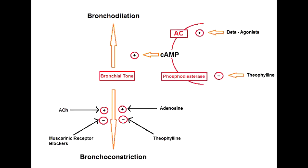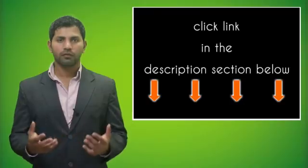What are the clinical uses of ipratropium and tiotropium? Ipratropium is used clinically to prevent bronchoconstriction and can also be used in the treatment of COPD. Tiotropium is a similar muscarinic antagonist but is a long-acting muscarinic antagonist used in the treatment of asthma.